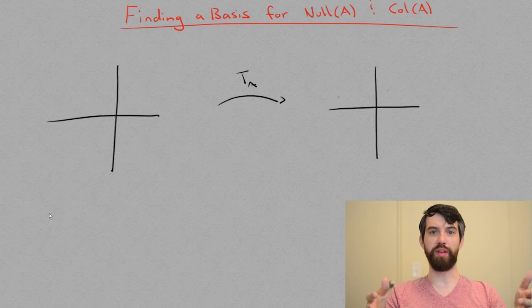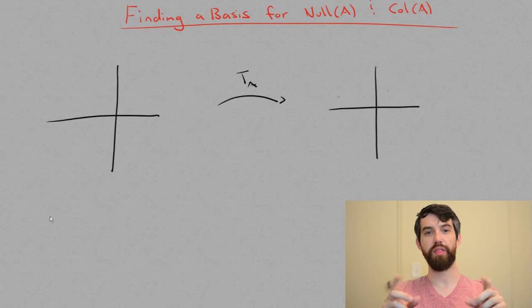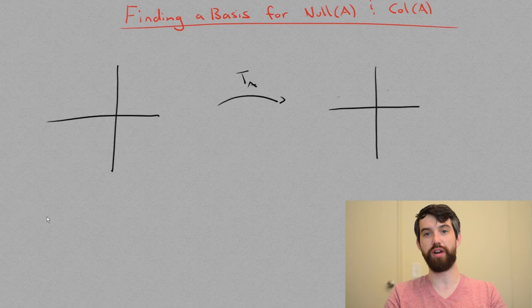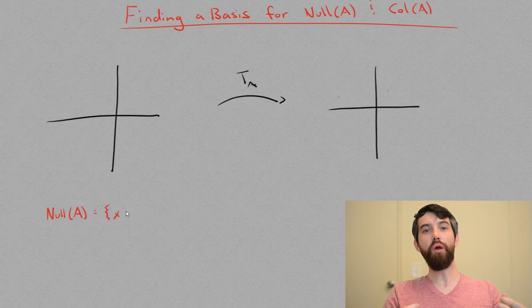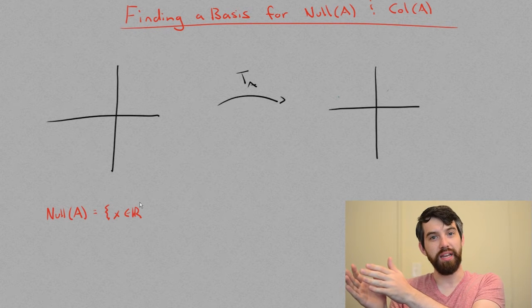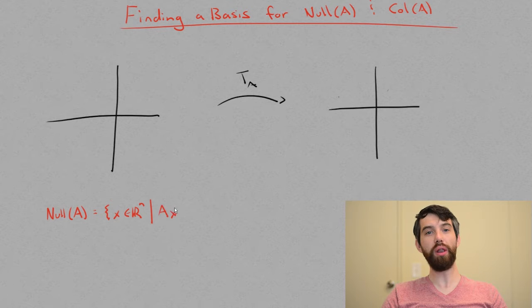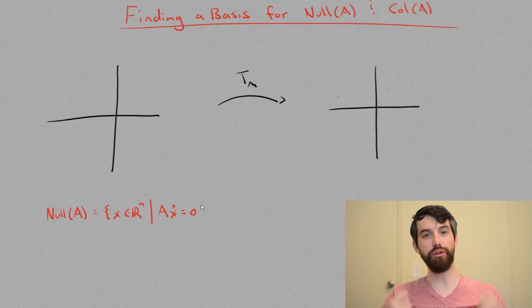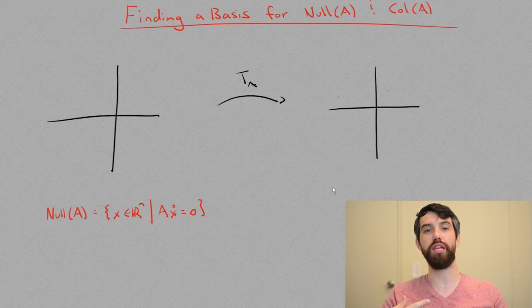Associated to a linear transformation, there are two different canonical subspaces: the null space and the column space of a transformation. The null space represents all of the vectors that are solutions to Ax equaling zero, or solutions to the homogeneous system.